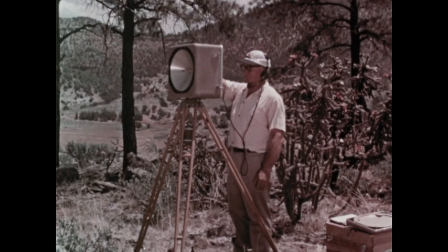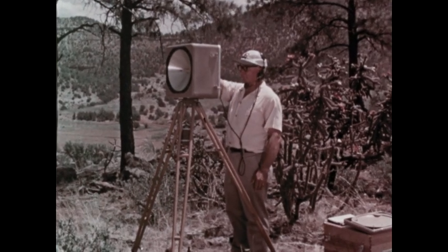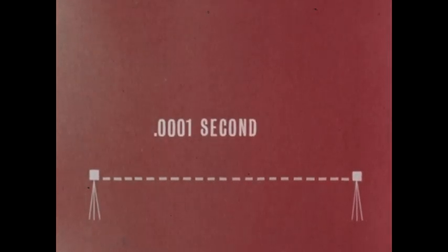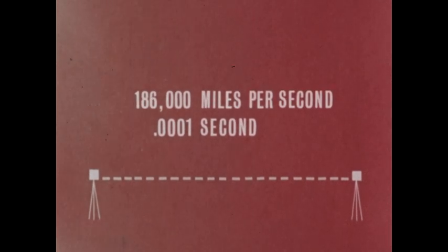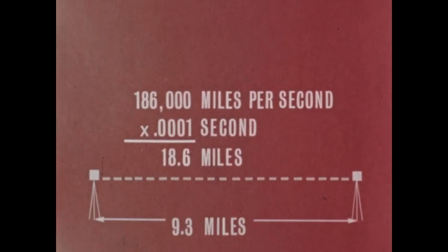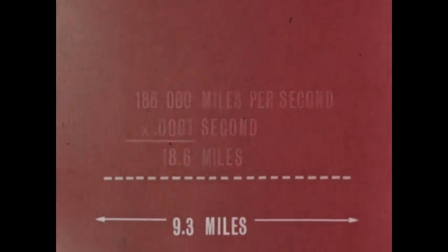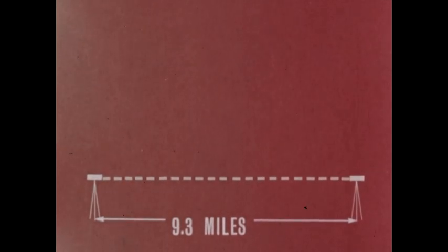Extremely sensitive equipment in the transmitter measures the time it takes the radio signal to make this round trip. Suppose it takes one ten-thousandth of a second to go and return. We know precisely how fast radio waves travel. We'll round it off to 186,000 miles per second for this example. Now the exact round trip distance between the two devices can be calculated. 18.6 miles. 9.3 miles, just half of that, is the one-way distance.